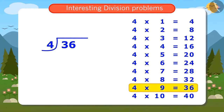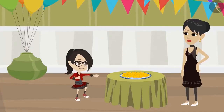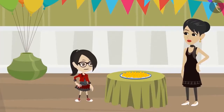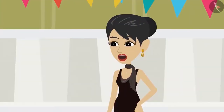4 nines are 36. That is, if 36 is divided by 4, the answer will come 9. That means I have to bring 9 boxes. Oh wow, that was easy! And I worked so hard to divide the ladoos into groups.